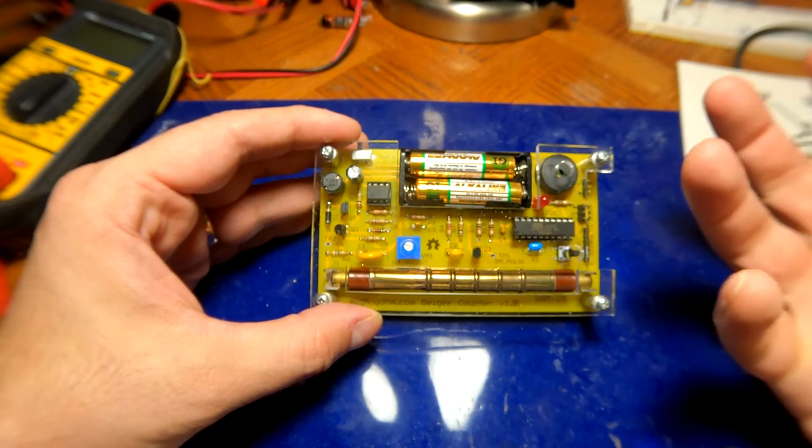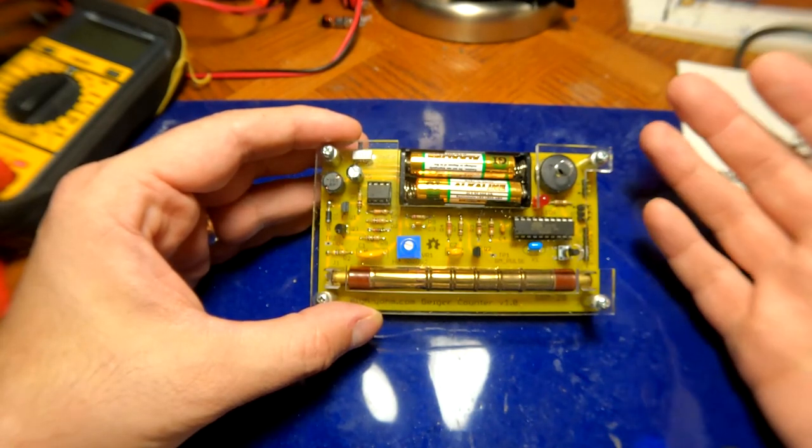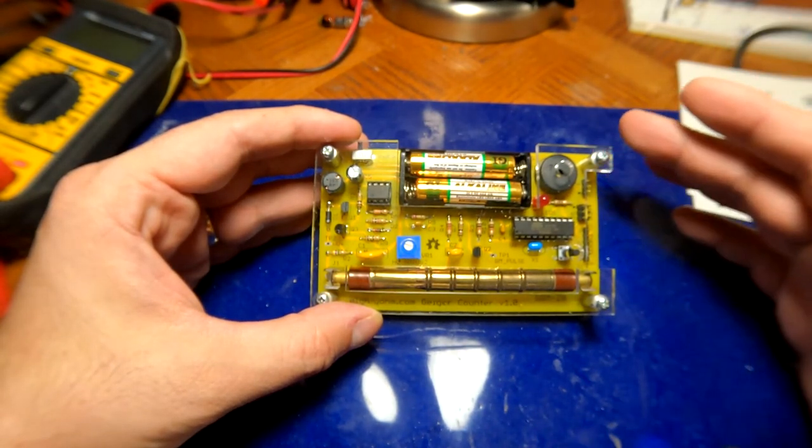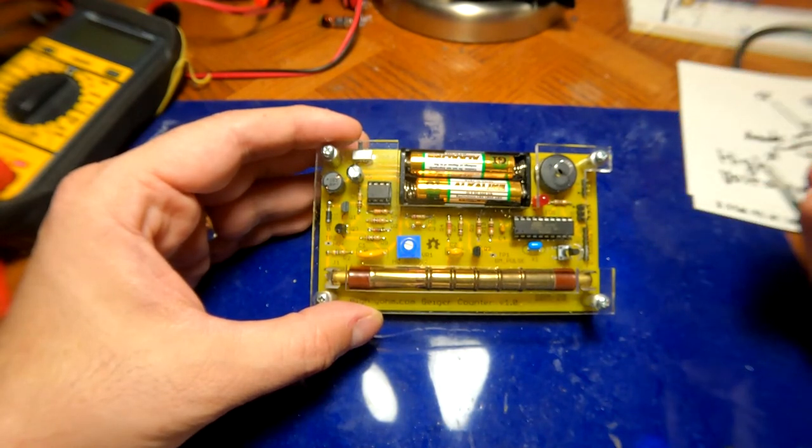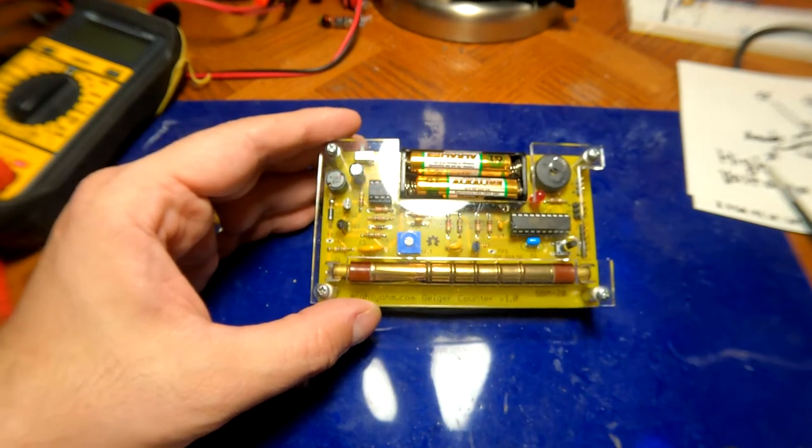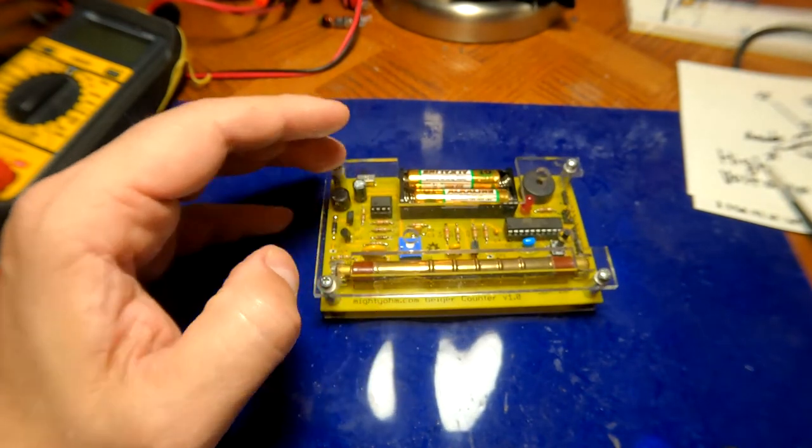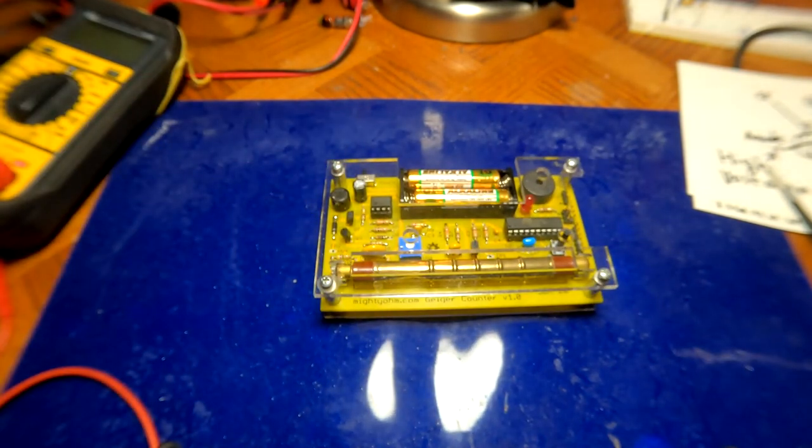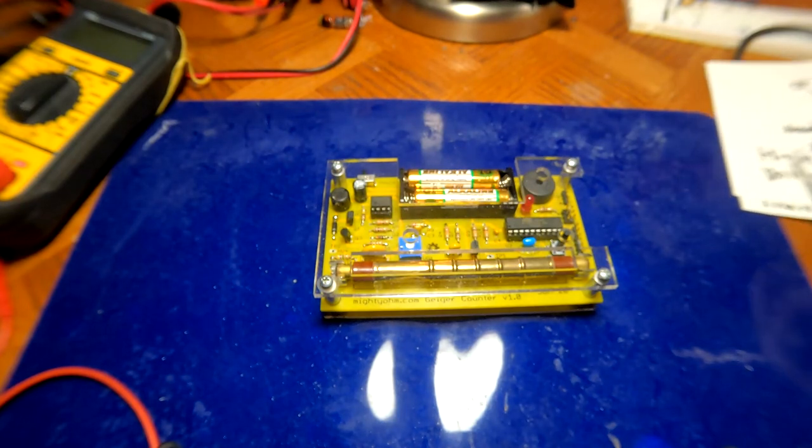But yes, alpha particles can't get in here, so you can't really use this for testing your smoke detector. If I had an end window or pancake type and I put it next to a smoke detector, it would go absolutely bananas most likely because americium is radioactive, not highly so. They're very safe, but it does have radiation in it.